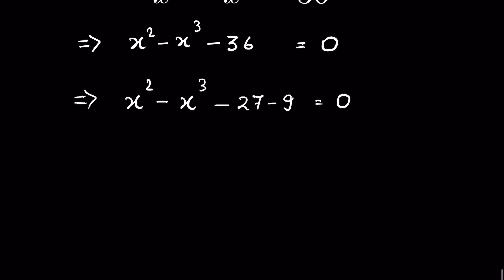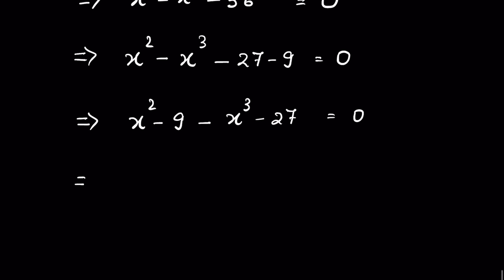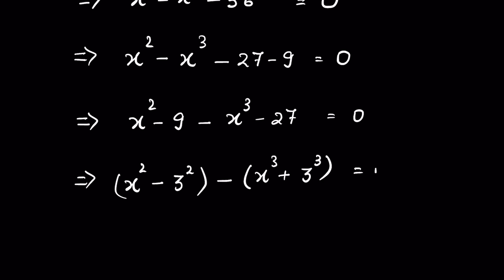Now let's rearrange it without changing the equation. We can write it as (x² minus 9) minus (x³ minus 27) is equal to 0, which is (x² minus 3²) minus (x³ minus 3³) is equal to 0.